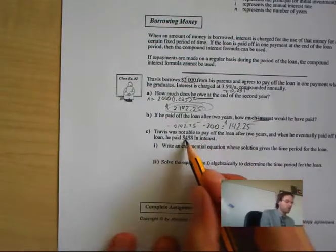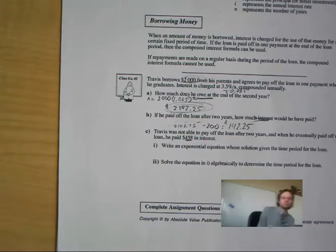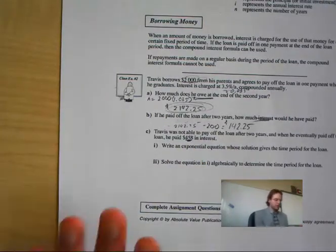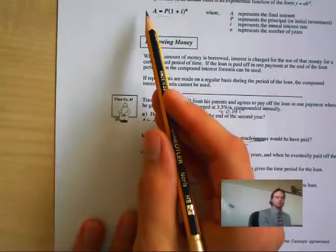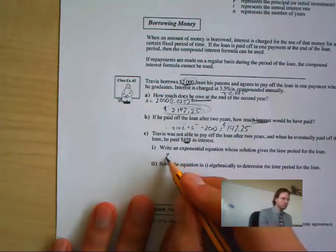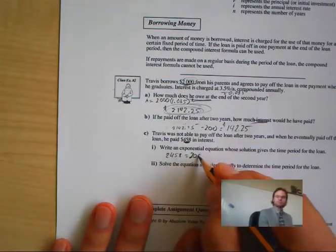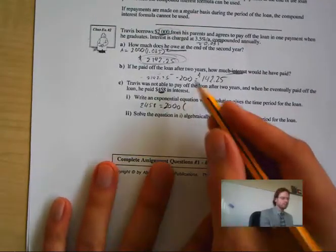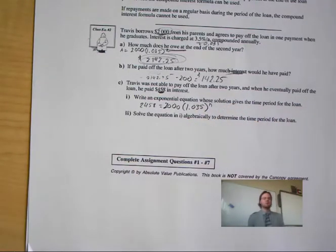Travis was not able to pay off the loan after two years. When he eventually paid off the loan, he owed $458 in interest. Now we need to write an exponential equation whose solution gives the period of time for the loan. If he paid that much interest, how much money did he pay? He paid his $2,000 plus $458. So my A, the final amount, is equal to $2,458. My initial is still $2,000, and my interest rate based on the formula is still 1.035. We are trying to figure out N, the number of years.